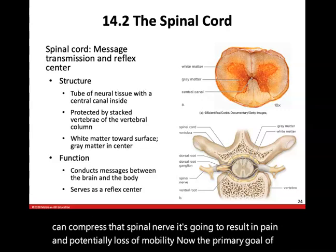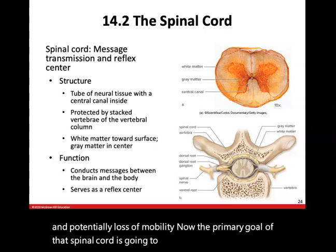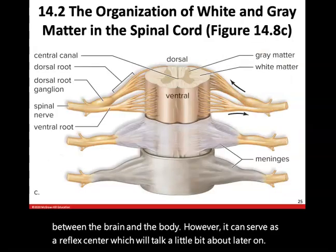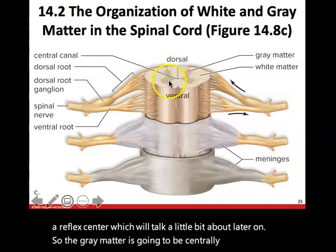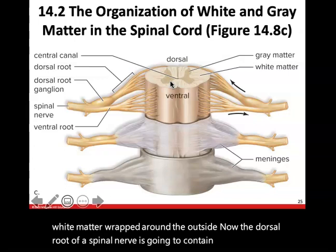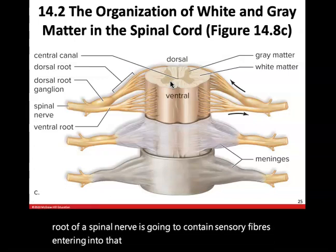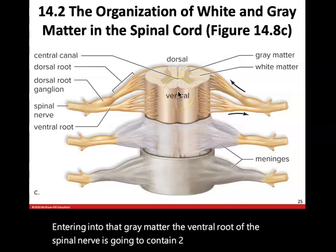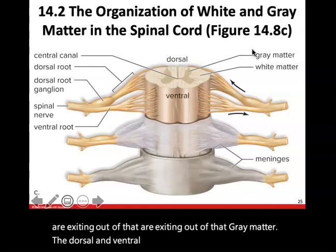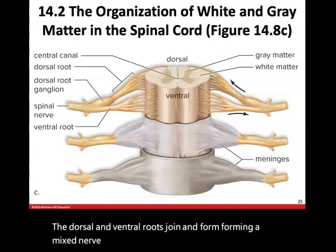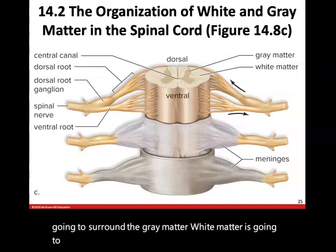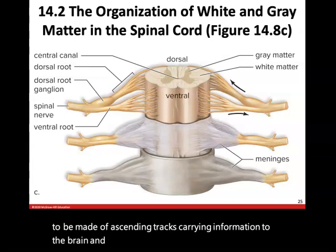The primary goal of the spinal cord is to conduct messages between the brain and the body, though it can also serve as a reflex center. The gray matter is centrally located. The dorsal root of a spinal nerve contains sensory fibers entering the gray matter, while the ventral root contains motor fibers exiting the gray matter. The dorsal and ventral roots join to form a mixed nerve. The spinal nerves are part of the peripheral nervous system. White matter surrounds the gray matter and is made of ascending tracts carrying information to the brain and descending tracts taking information away from the brain.